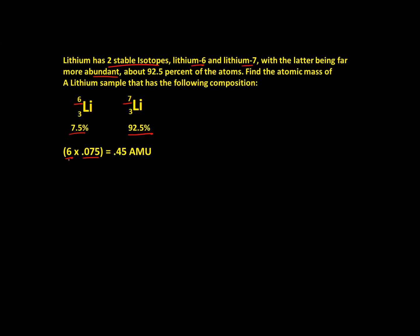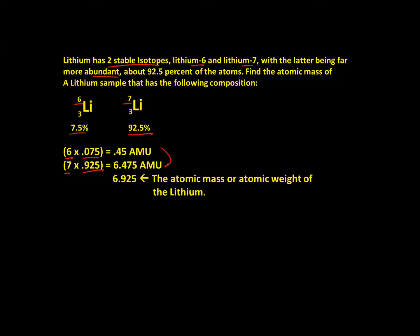So let's calculate the lithium example. Lithium-6 represents 7.5% of the total, which works out to 0.45 amu. Lithium-7 represents 92.5%, which works out to 6.475 amu. Adding these up gives a total of 6.925 amu — the atomic mass or atomic weight of lithium as found in nature or this particular sample.